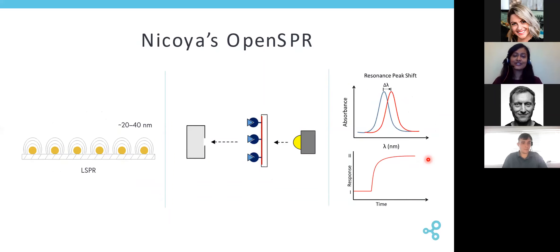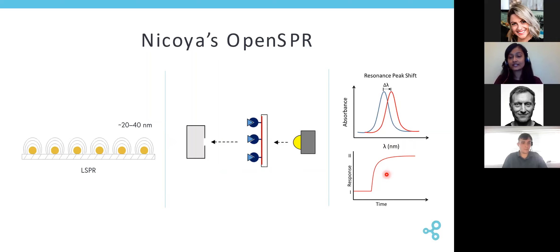For Nicoya's OpenSPR technology, instead of using a thin film of gold, we use a nanostructured gold. We measure a change in the absorbance peak instead of the angle change used in traditional SPR instruments. The nanostructured gold will absorb light, creating a distinct absorbance peak, and as binding events occur on the sensor, you will see a shift in this absorbance peak, which is translated into a response. With our nanostructured gold, we have greatly simplified the optics — we have an LED light source that shines on your sensor and a detector on the other end. We continue to measure the change in the refractive index close to the sensor surface, just in a different way.